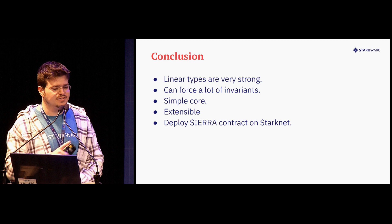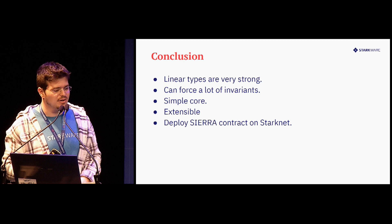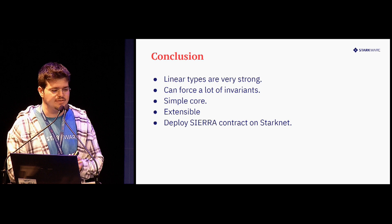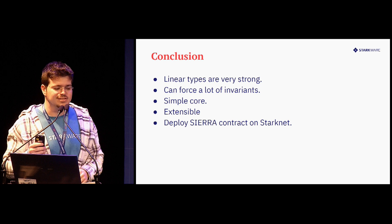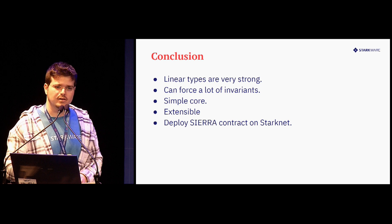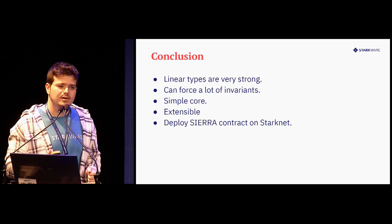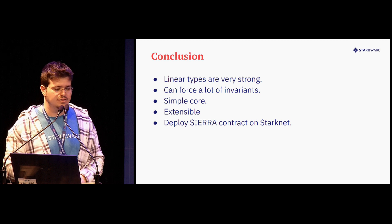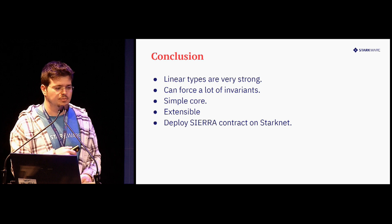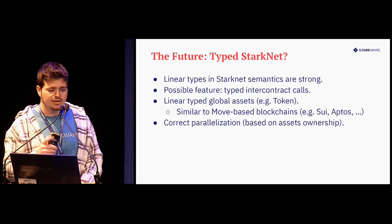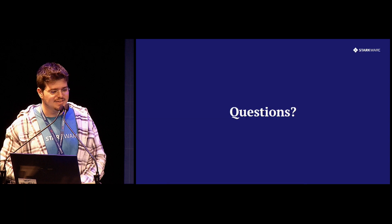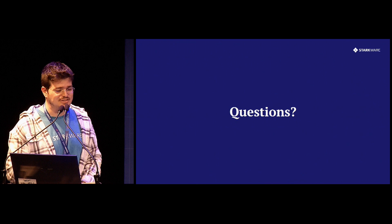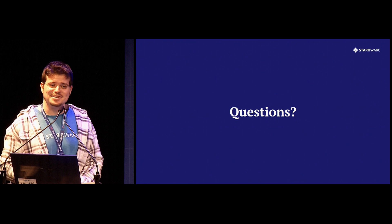Alright, conclusion. Linear types are very strong — we can force a lot of invariants using them. Simple core, extendable. Users now need to deploy Sierra code on StarkNet to make sure that contracts are indeed safe — they don't deploy Casm, they deploy Sierra. Future work I don't have time to talk about — you can ask me later. Thank you very much.